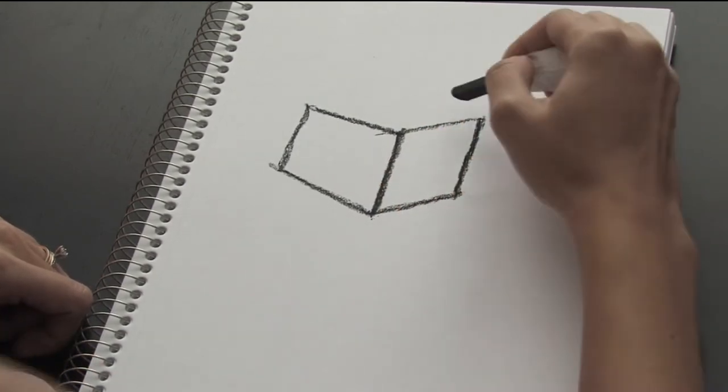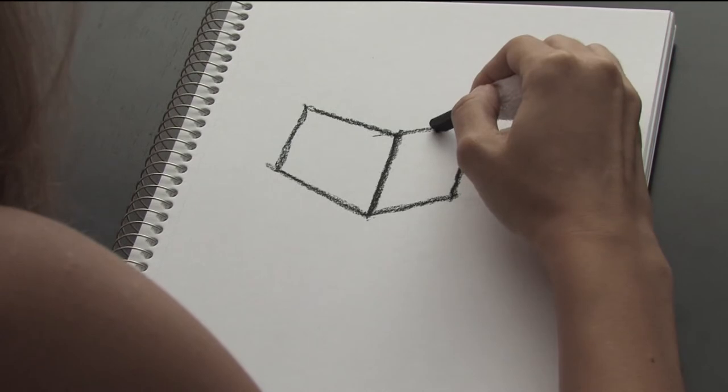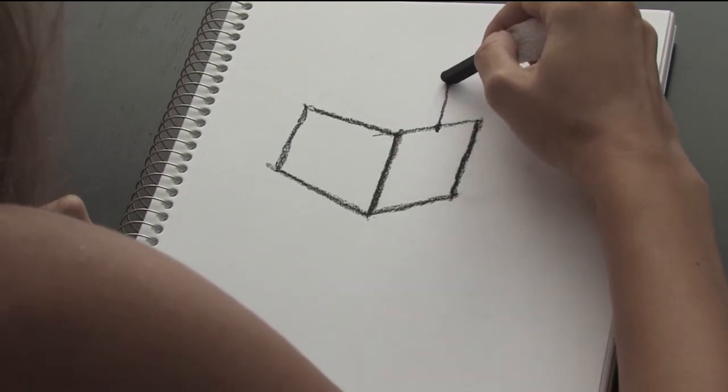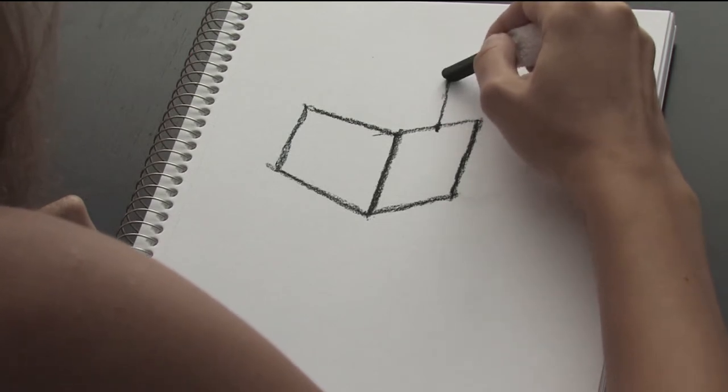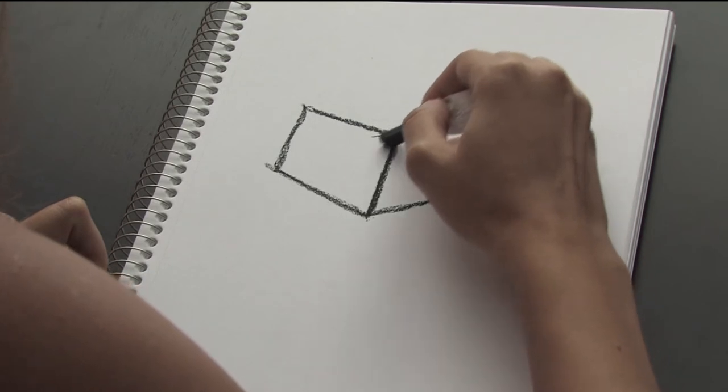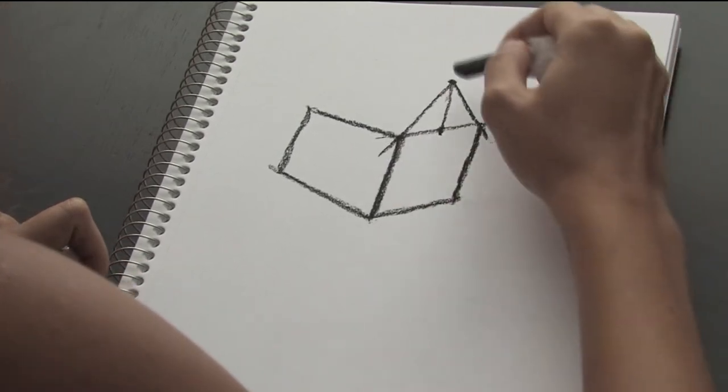And now we need to find the center of this line and draw the vertical line just right up. This is the height of our roof and just draw the line like this.